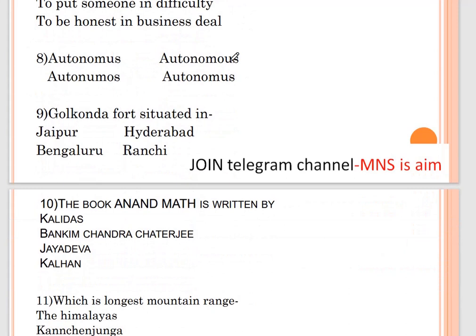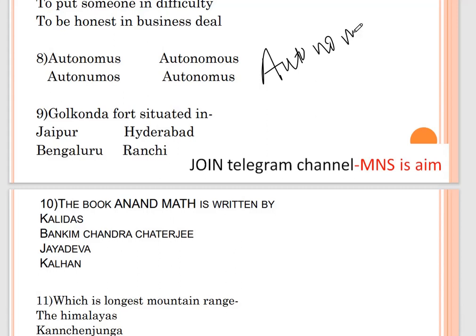Question number eight: spelling check — the correct spelling of 'autonomous'. The correct spelling is A-U-T-O-N-O-M-O-U-S. Option B is correct.